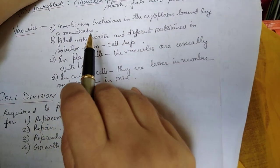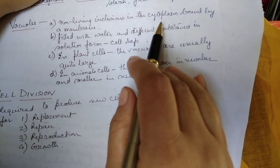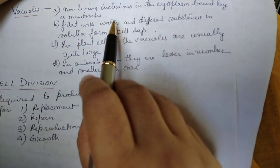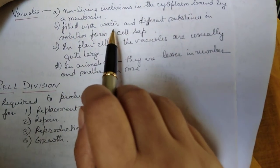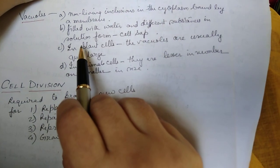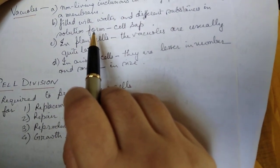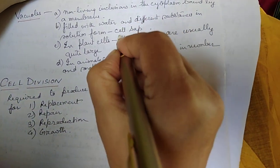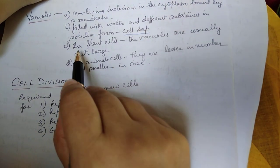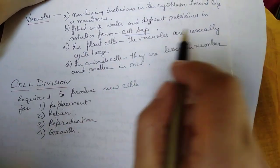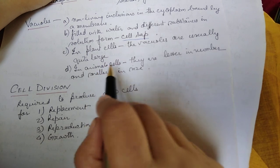Now vacuoles. Vacuoles are non-living inclusions in the cytoplasm bound by a membrane. They are filled with water and different substances in the solution form, that is called cell sap. In plant cells the vacuoles are usually quite large. In animal cells they are lesser in number and very small in size.